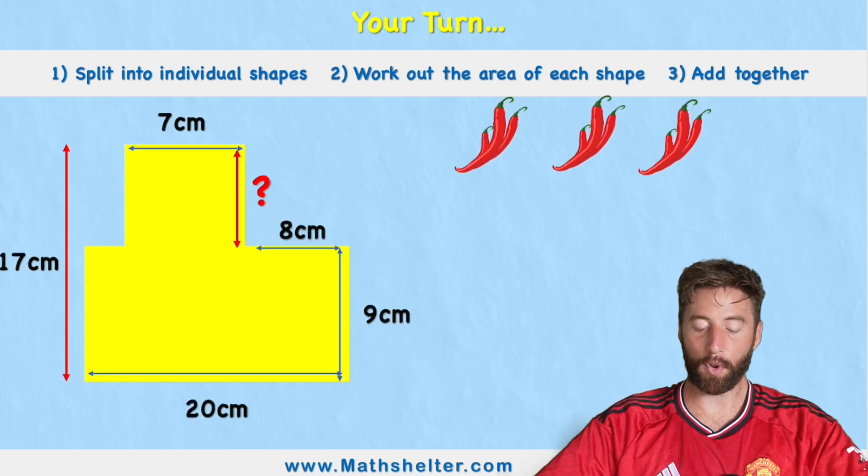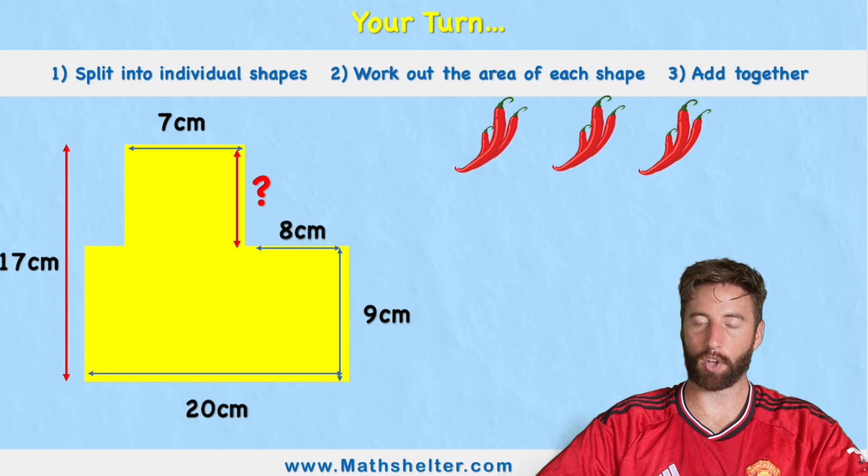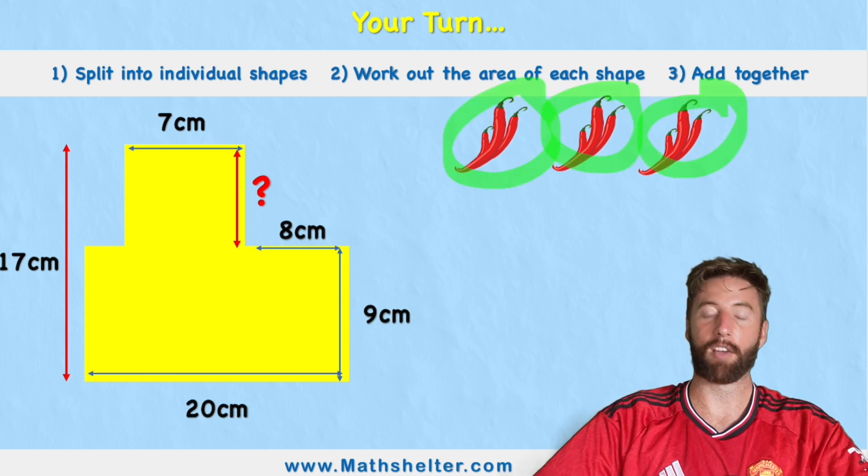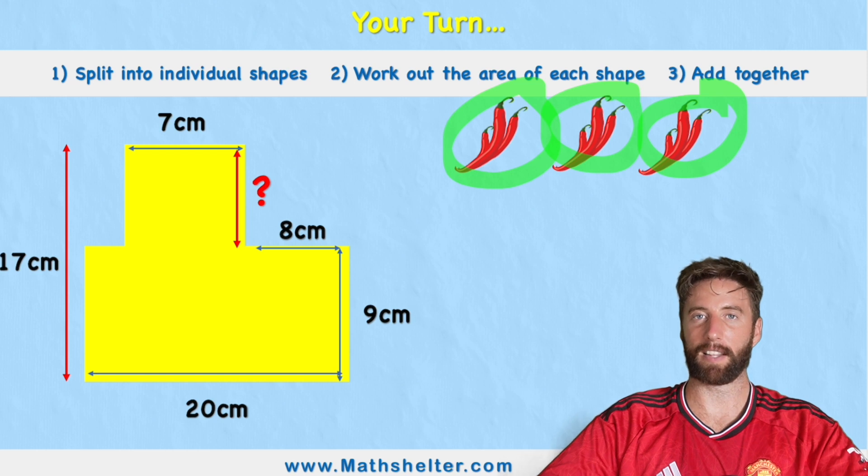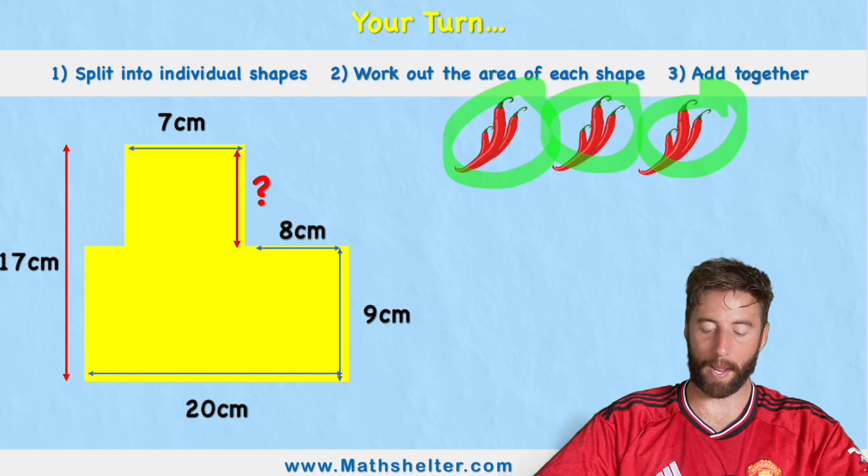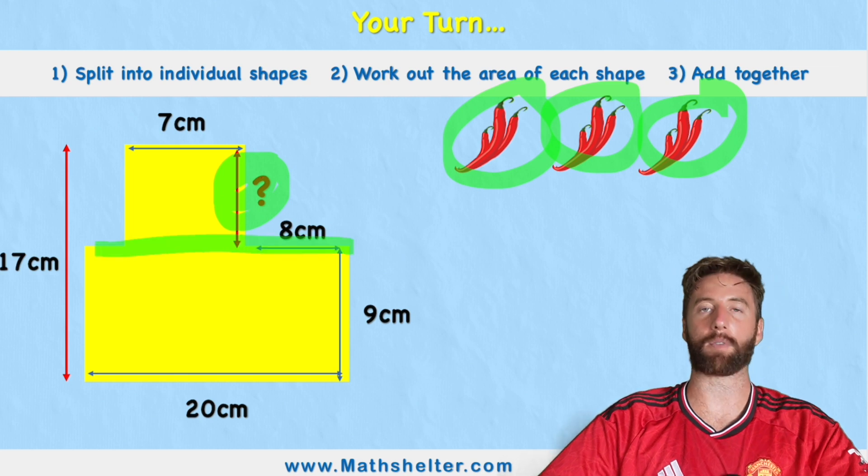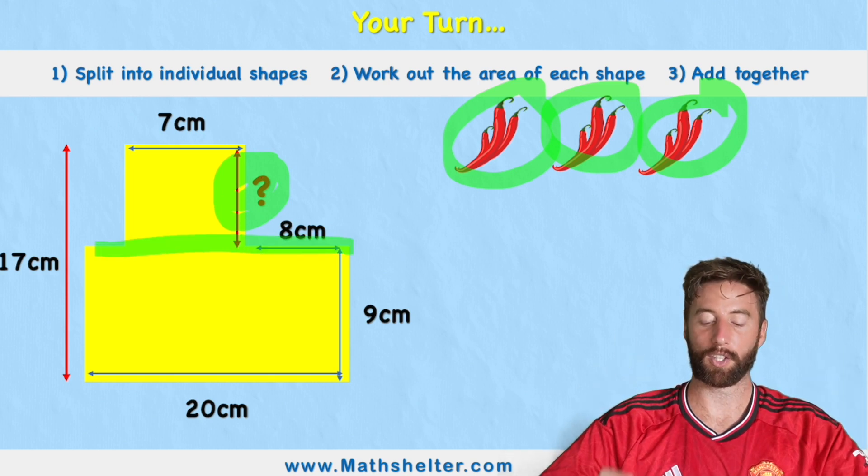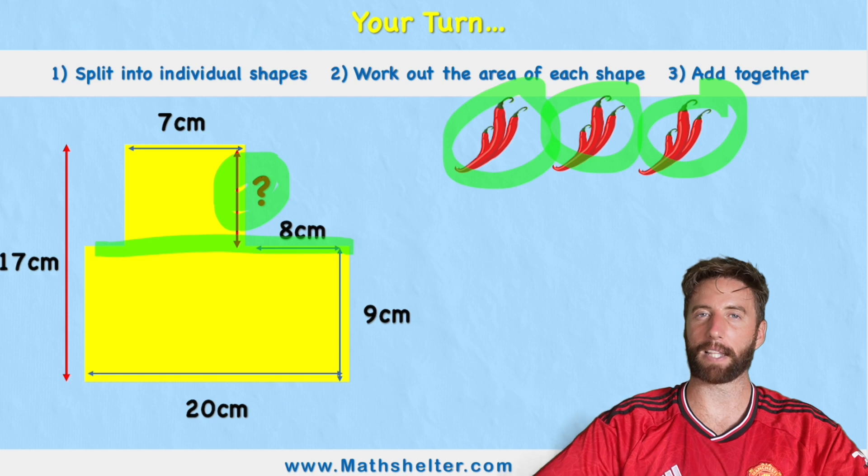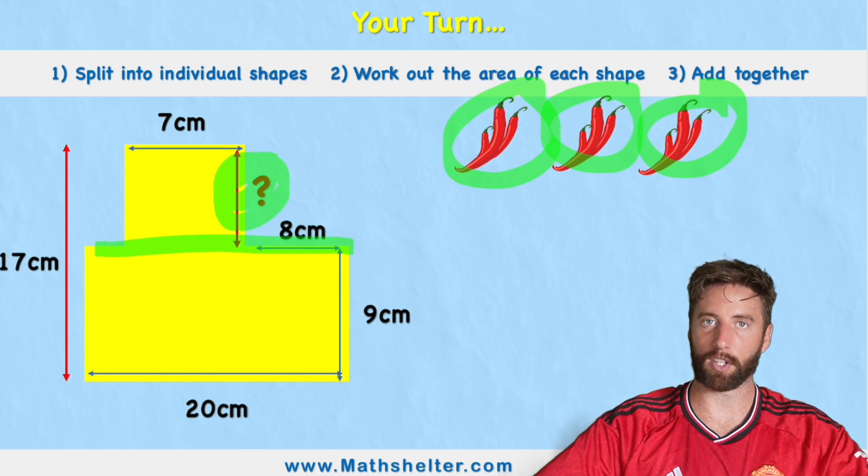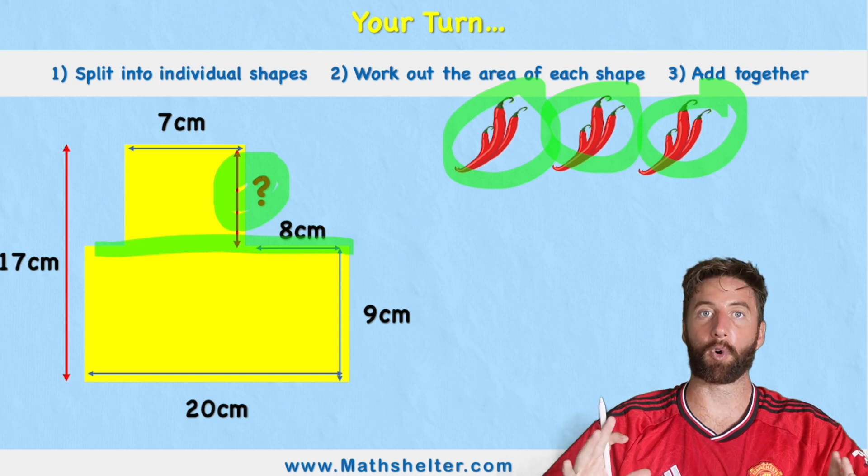So now it's your turn. I want you to find the area of this compound shape, and I warn you, I've given this a 3 red star chili. This is super difficult. We have missing lengths, we have compound shapes, we have all sorts going on. So if you get this right, you are a bit of a maths genius. Take your time, practice, and then put your answers in the comments section. Press pause. Good luck.